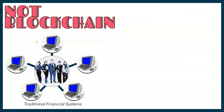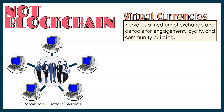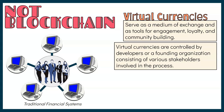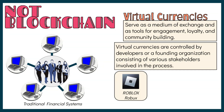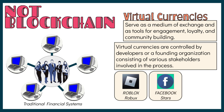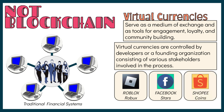Another example that may use centralized networks is virtual currency. It can serve not just as a medium of exchange, but also as tools for engagement, loyalty, and community building. Virtual currencies are controlled by developers or a founding organization consisting of various stakeholders. For example, in Roblox, players use Robux to purchase in-game upgrades and items, managed by Roblox developers. Facebook Stars are used within the Facebook ecosystem to support creators and are controlled by Facebook. Shopee Coins are earned and used within the Shopee platform for discounts and promotions.